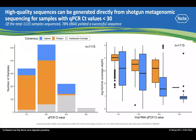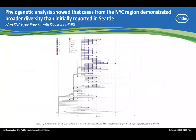The plot to the right shows the correlation between viral genome sequence coverage depth as a function of CT value. As expected, as the CT value decreases, the viral genome coverage depth increases regardless of the sequencing measure used. Based on their sequencing results, phylogenetic analysis showed that cases from the New York City region demonstrated broader diversity than initially reported in Seattle.